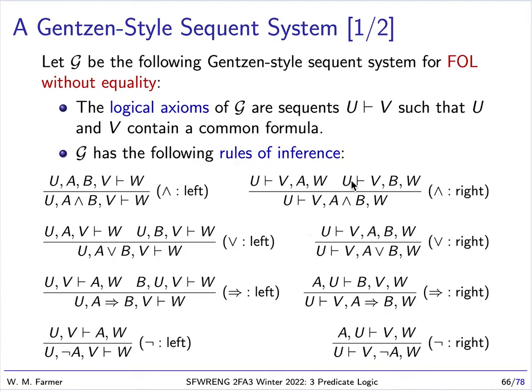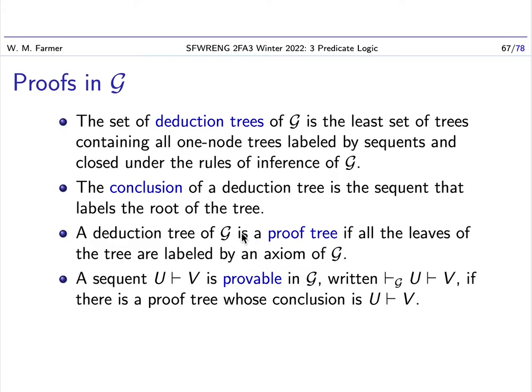So anyway, last time we presented this Gentzen-style proof system. It had one logical axiom and a whole bunch of rules of inference. And we had rules of inference, pairs of rules of inference, for each Boolean operator and each quantifier.